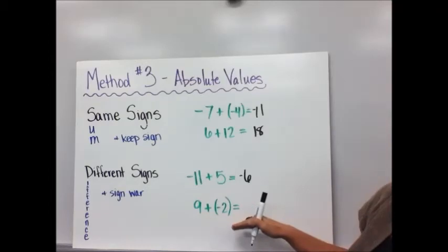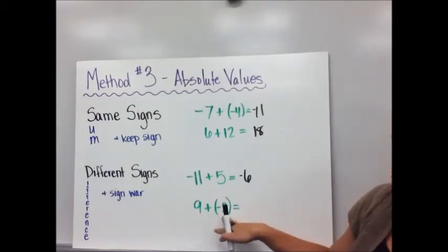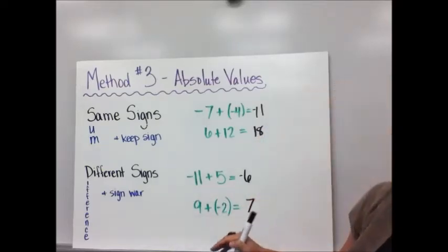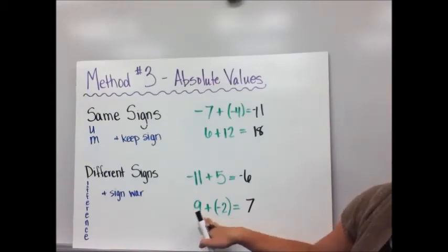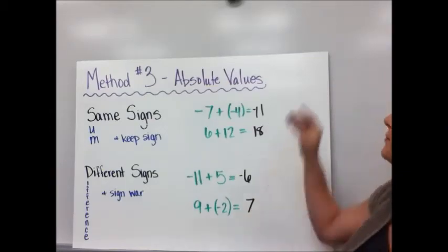Let's work this one. Nine plus negative two. They have different signs. This one's positive. This one's negative. The difference between nine and two is seven. My sign more. The positives win because nine is greater than two. So my answer is positive seven.